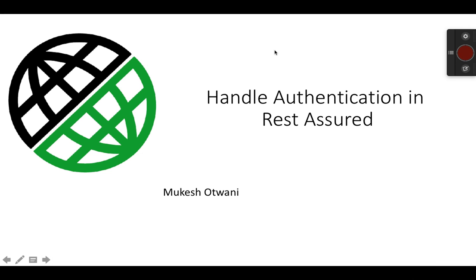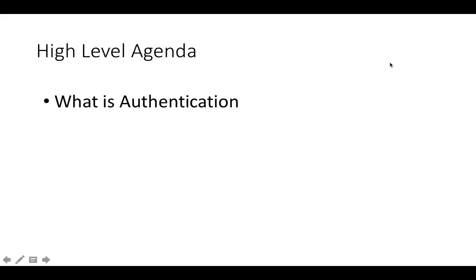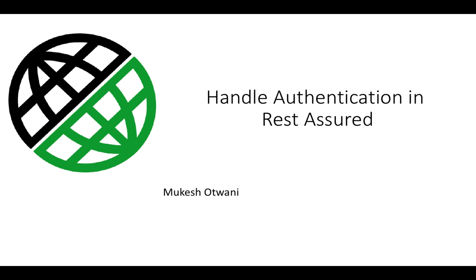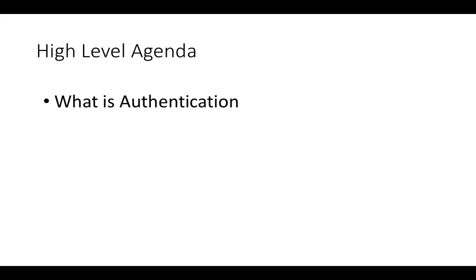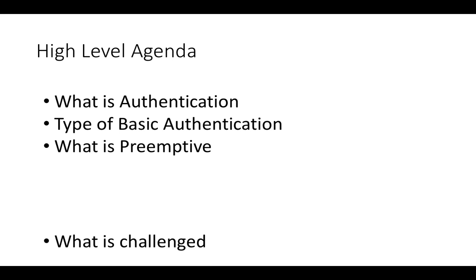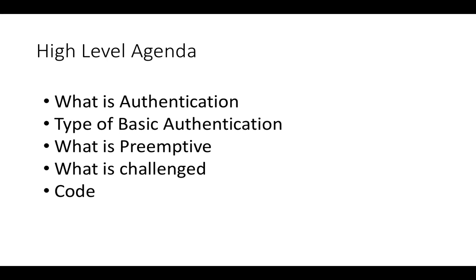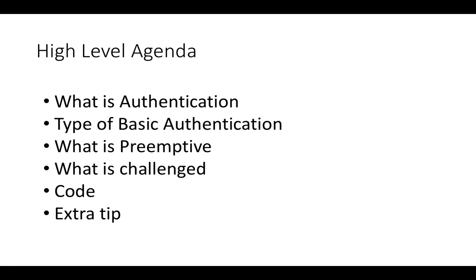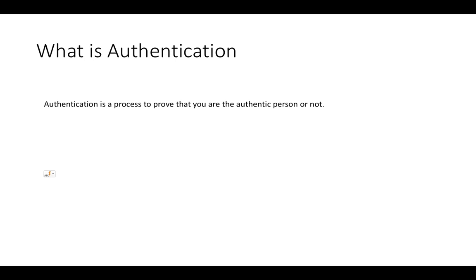Hey, hi everyone, this is Mukesh from learn-automation.com. Today in this video we are going to talk about how to handle authentication in REST Assured. We'll start with what exactly is authentication, different types of authentication, types of basic authentication, and we will also talk about what is primitive and what is challenged. Once we are done with the theory part, we will talk about how to write the code. We'll also discuss how we can create a library or avoid passing authentication to each and every file.